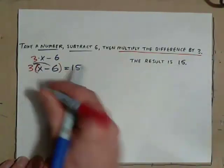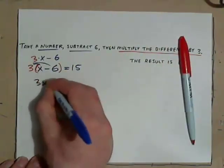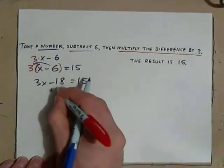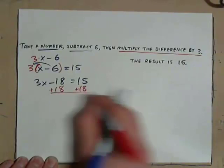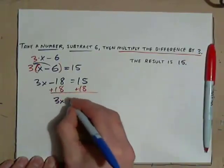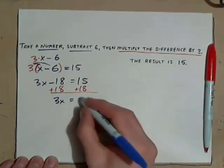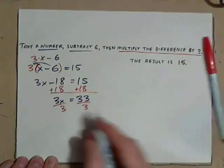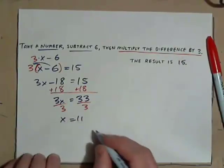So, multiply the 3 in, and we should get 3x minus 18 equals 15. Add 18 to both sides. And 3x equals 33. Divide by 3 on both sides, and we should have x is 11. And you should know how to do this by now.